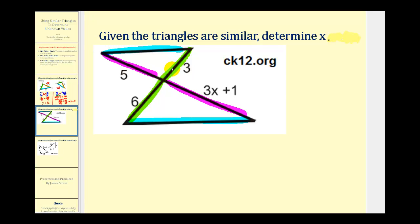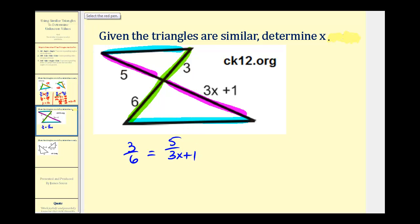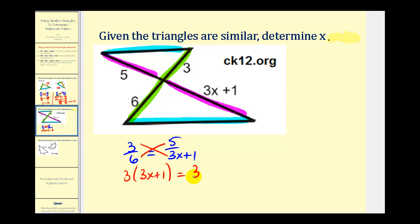For our ratios, let's compare the smaller triangle to the larger triangle. So three to six must equal five to three x plus one. We'll cross multiply: three times three x plus one must equal six times five, which is 30.